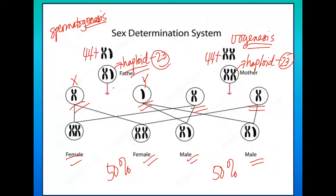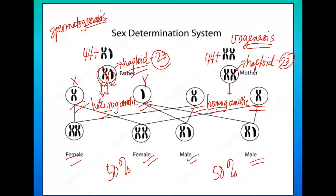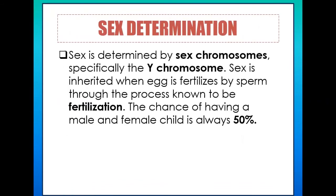Another concept to remember: the male gametes carry both X and Y chromosomes, making the male sex chromosome type heterogametic — 'hetero' meaning two different chromosomes. For females, there are no other chromosomes other than X, so we call it homogametic — 'homo' meaning same. So again, we have 50% female and 50% male.